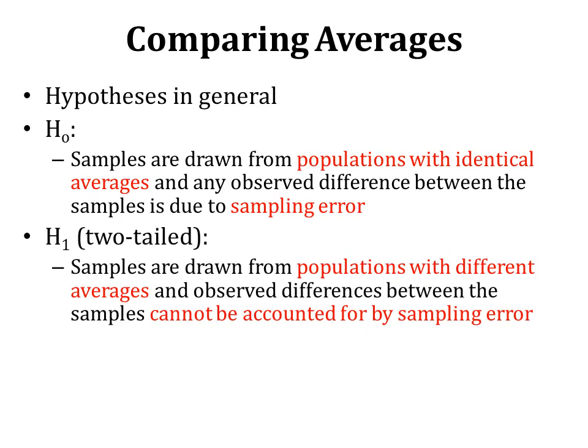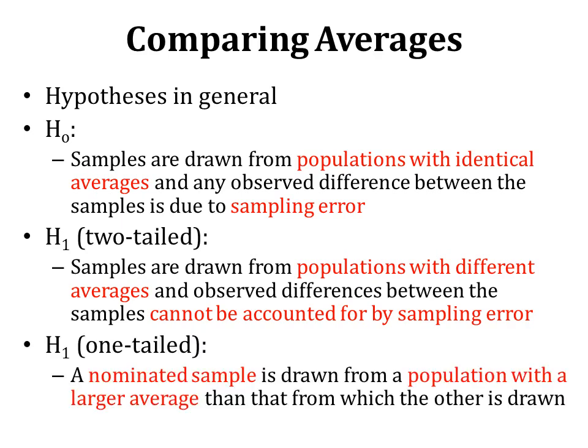The two-tailed alternate hypothesis is that samples are taken from populations with different averages, and observed differences between the samples cannot be accounted for by sampling error alone. We are not nominating any specific population to have the greater mean value. In the one-tailed alternate hypothesis, we nominate a sample to have a larger mean value — a nominated sample is drawn from a population with a larger average than the other.